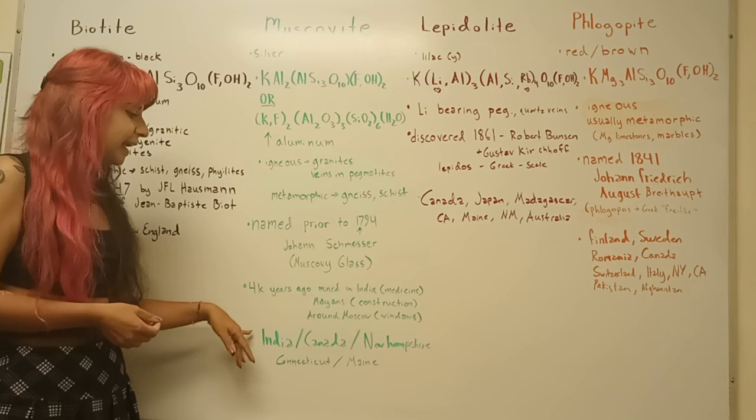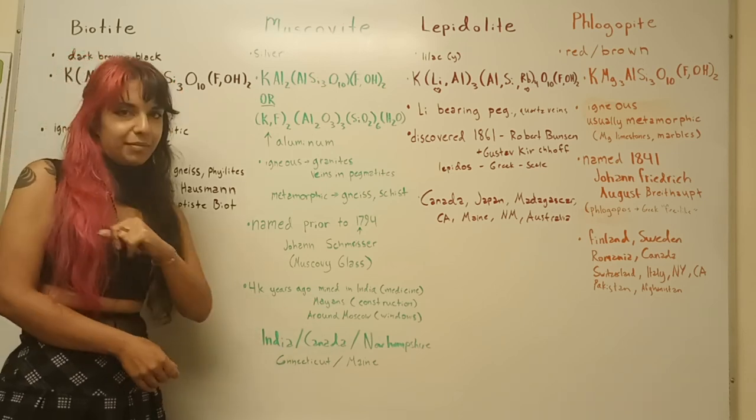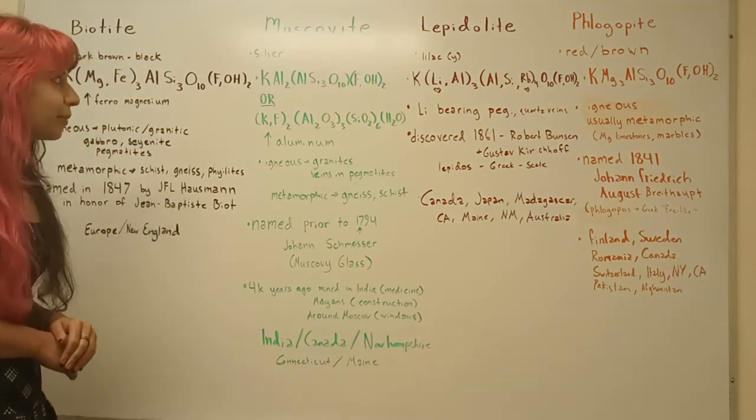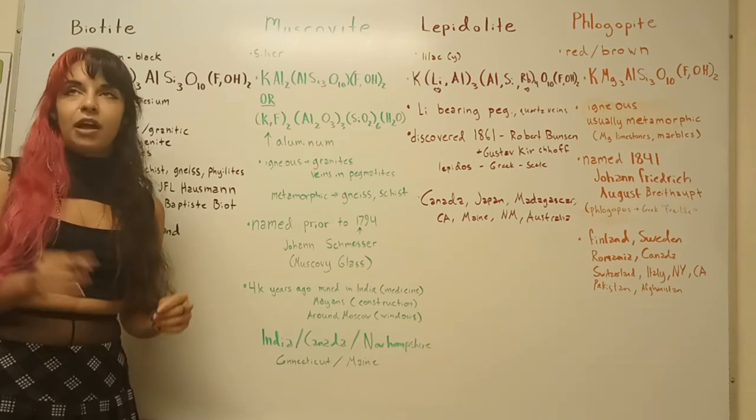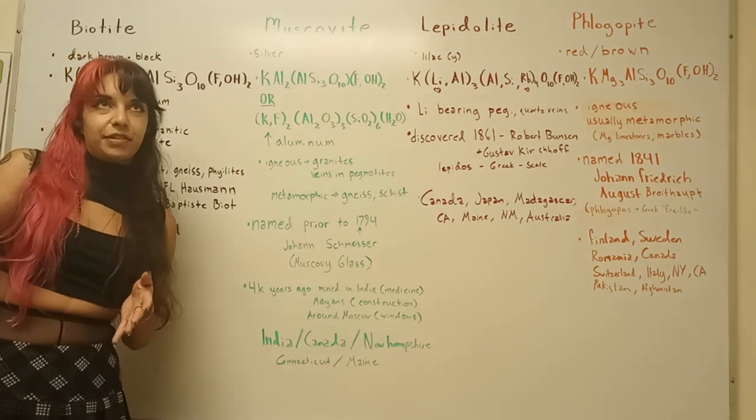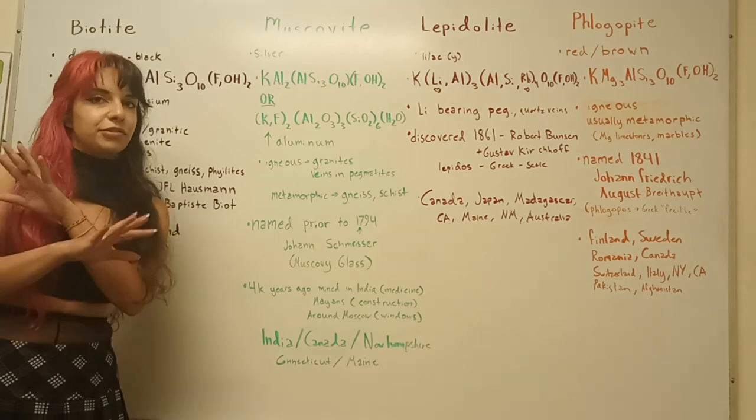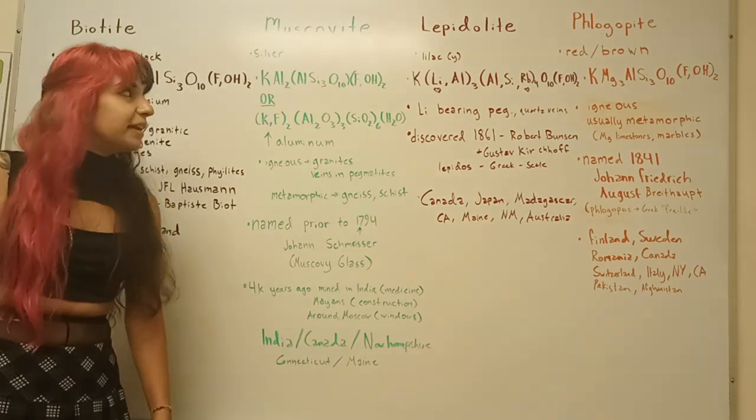You can find it pretty much everywhere as well. Some of the main players here are India, Canada, New Hampshire, Connecticut, and Maine. I know, for example, there's a pass in Colorado and one of the faces of where the rock got blown out is just like pure muscovite. It's pretty crazy.